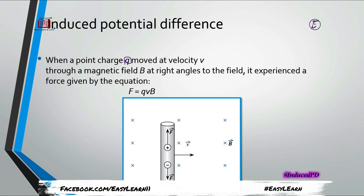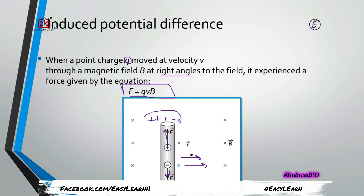When a point charge q moves with velocity v through a magnetic field B at right angles to the field, it will experience a force given by the equation F = qvB. This force causes positive charges to move toward one end of the conductor and negative charges toward the other, so the conductor behaves like a battery source with a positive terminal on one side and a negative terminal on the other.